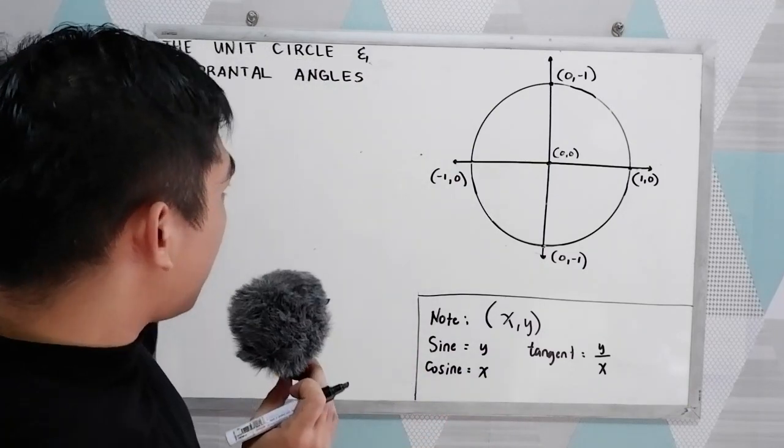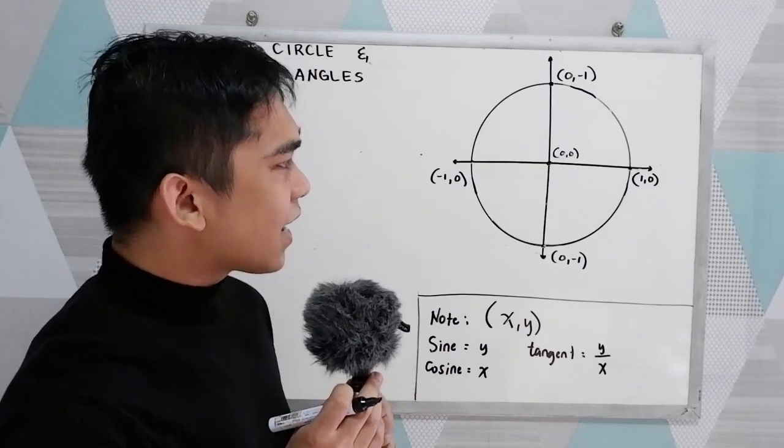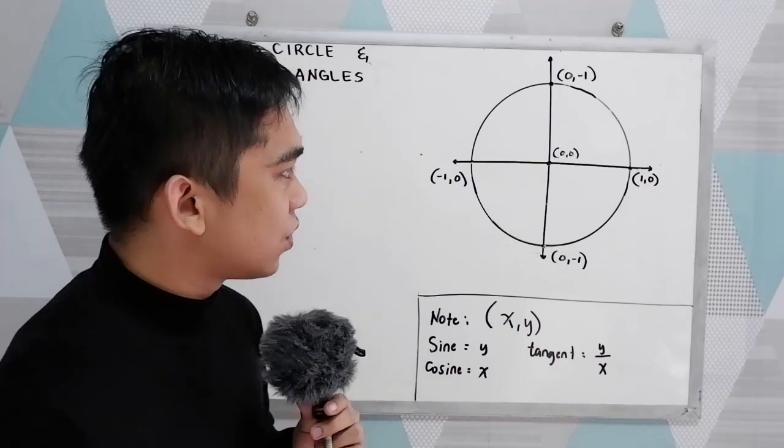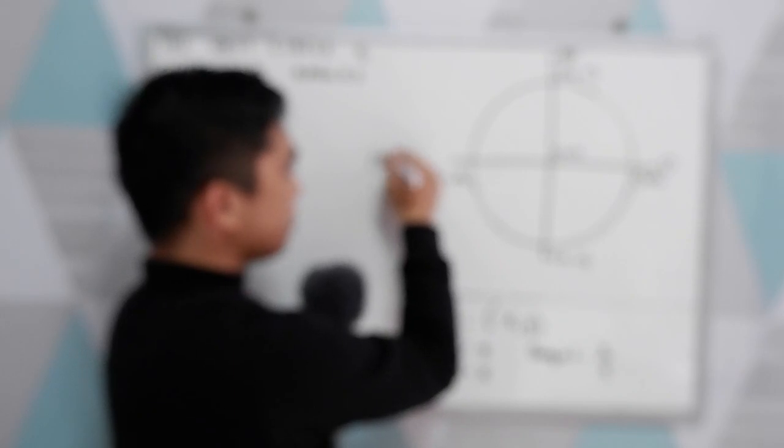Now, recall the definition of quadrantal angles. These are the angles with terminal sides located on the x or y axis. Our angle here is 0°, on the y axis we have 90°, here we have 180°, we have 270°, we have 360°, we have 450°, we have 540°, and we have 630° and so on. Or simply, the multiples of 90° in our quadrants.